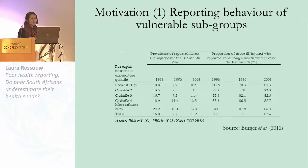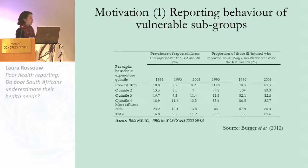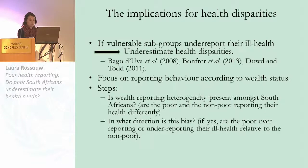If the poor and the non-poor use different reporting scales, and the poor as a vulnerable subgroup underestimate their ill health, this will have implications for estimating health disparities — because you're underestimating the gap in health outcomes between the poor and the non-poor. I'll be focusing on reporting behavior according to wealth status, measured using the asset index, classifying as poor those in the bottom two wealth quintiles and non-poor those in the top three.